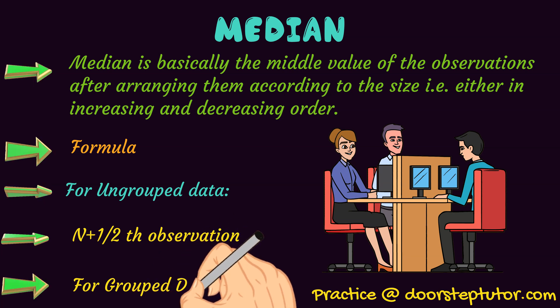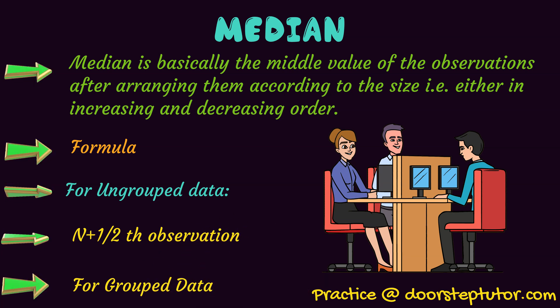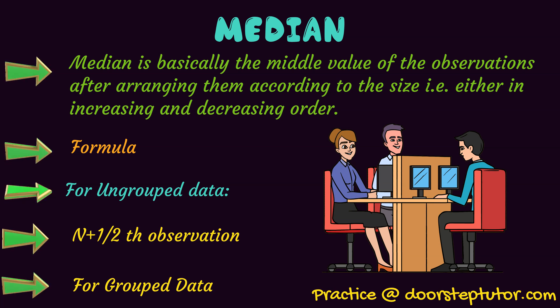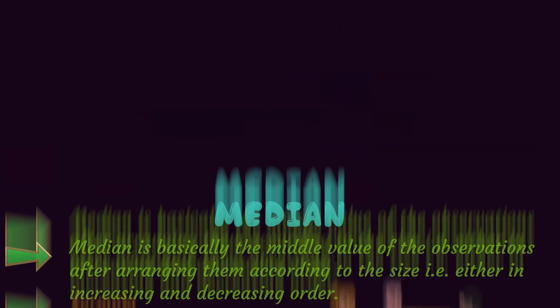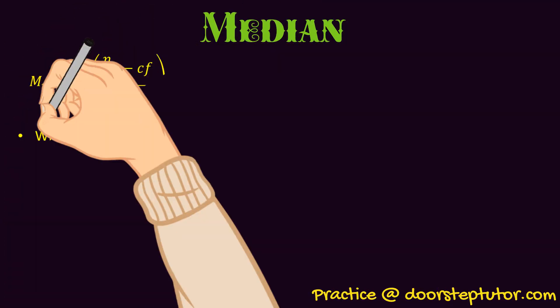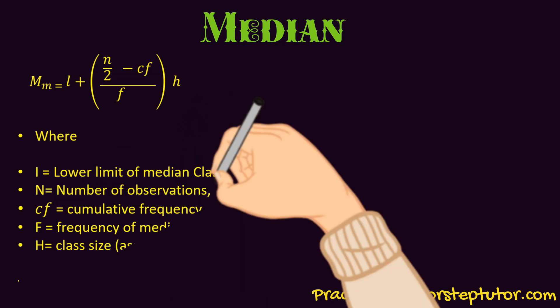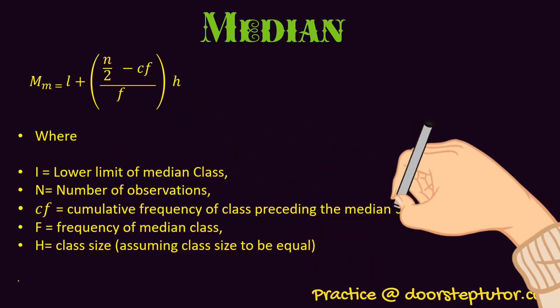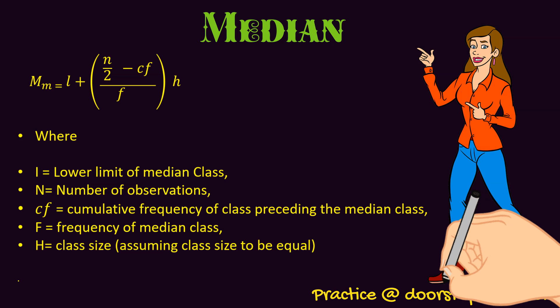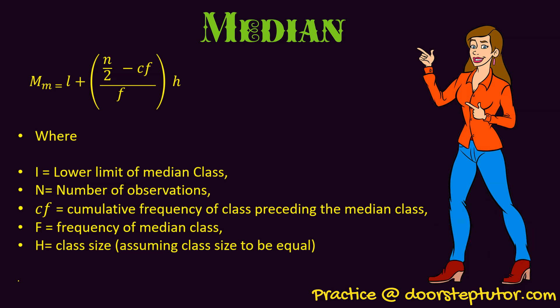For grouped data, the data can also be in groups — like 50 to 60 marks are secured by 10 students, then 60 to 70 by 20 students, and so on. The formula is: L + [(n/2 − CF) / f] × h. Here L is the lower limit of the median class, and the median class is identified using n/2.